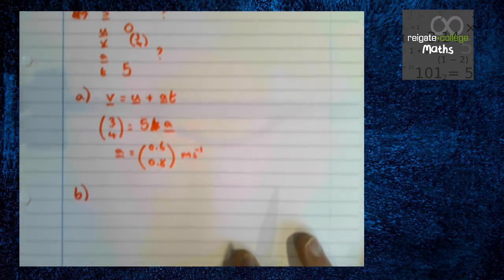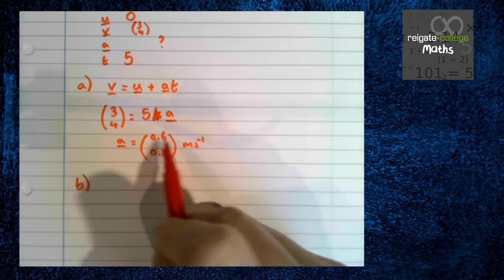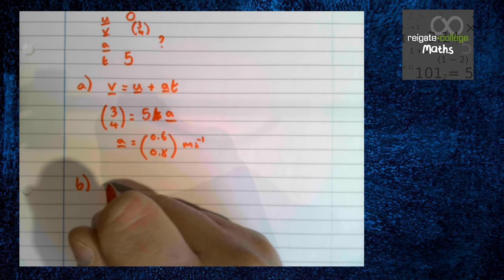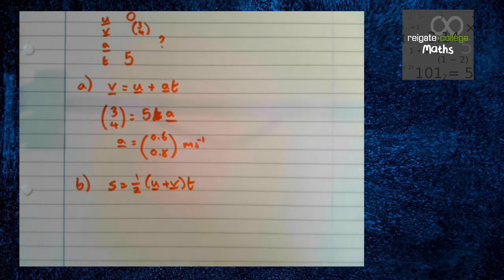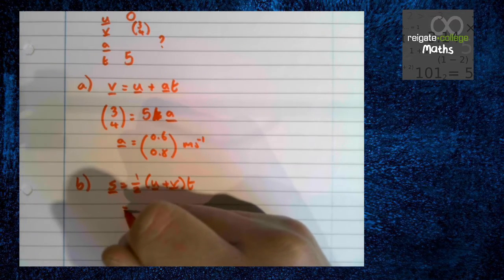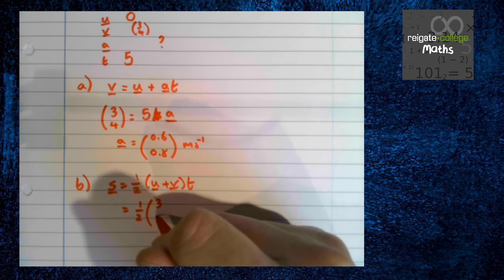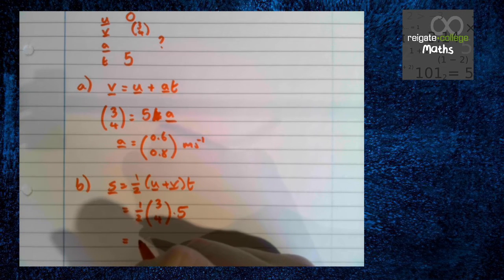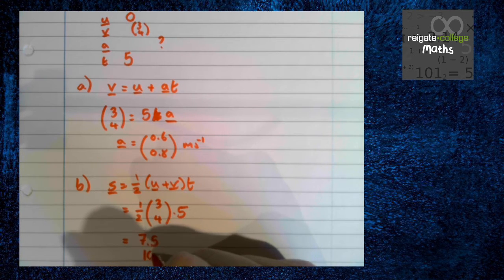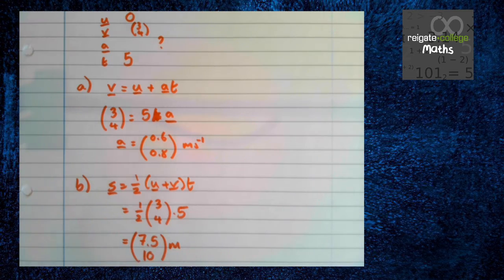Part b, we want to find the displacement vector. So now we don't want to use this a just in case we got it wrong. So we use s is a half u plus v times t. We could use this if you wanted to, if you wanted to use a different equation. But just in the off chance you happen to get that wrong, this equation also works fine. So again, we've got a half times 3, 4 times 5 because u is 0. So we have 15 over 2, 7.5, and 10. Okay, we're told for the displacement vector, not the displacement itself. So we're done.